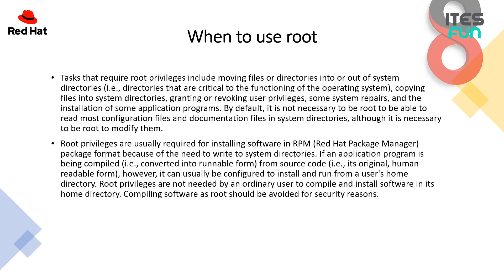If an application program is being compiled — that is, converted into executable form from source code, the original human-readable form — it can usually be configured to install and run from the user's home directory. Root privileges are not needed by an ordinary user to compile and install software in their home directory, and compiling software as root should be avoided for security reasons.